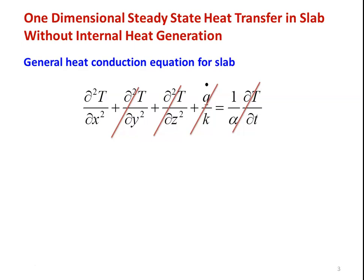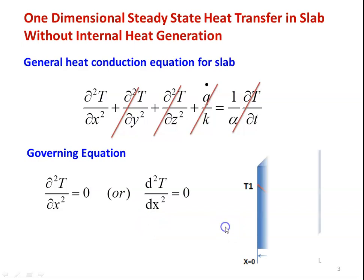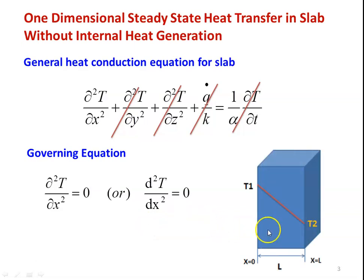What is left out? The governing equation for this defined situation is ∂²T/∂x² = 0. Temperature is the dependent variable and x is the independent variable — there is only one variable. We can write it as d²T/dx² = 0. This equation is applicable to a slab. We consider a slab and take heat transfer only in the x direction.